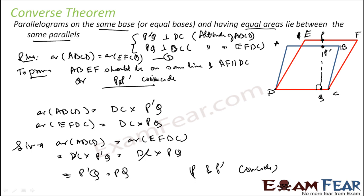Because Q is common — if PQ equals P'Q, that means P and P' coincide. So if P and P' coincide, these two lines actually coincide and form a single line that will be parallel to DC. Thus the converse is true: if two parallelograms are on the same base and have equal area, then they have to be between the same parallels.